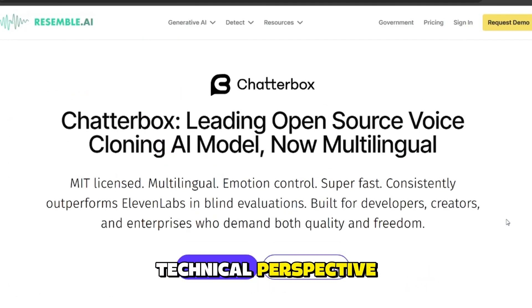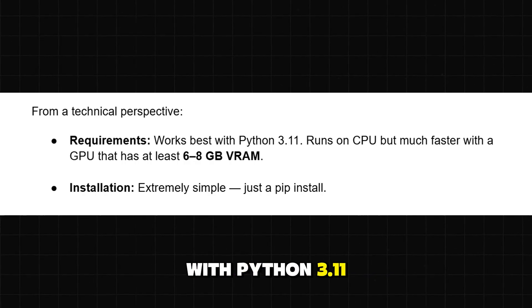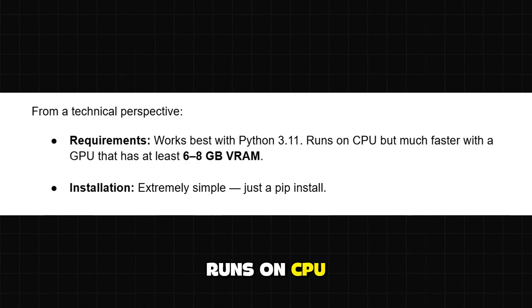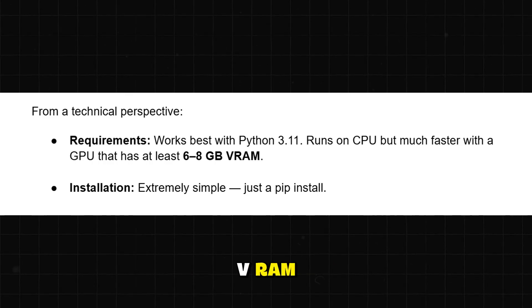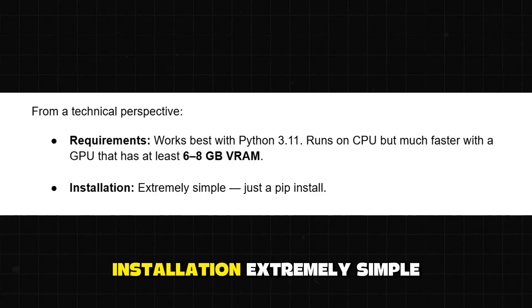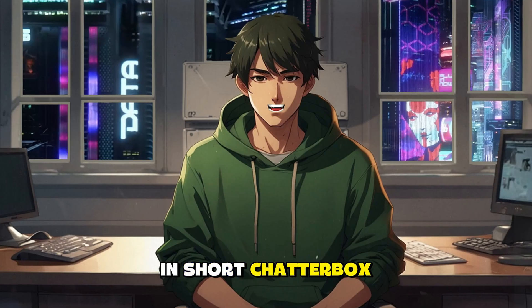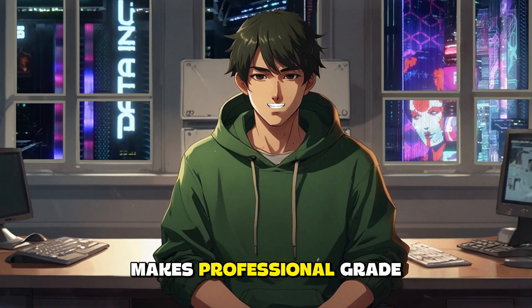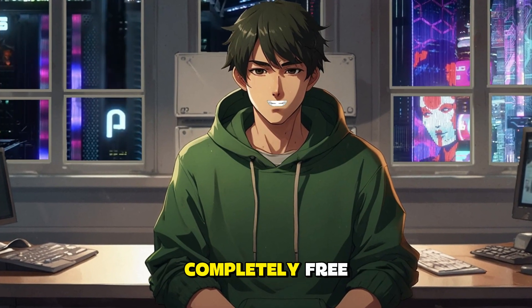From a technical perspective, Chatterbox works best with Python 3.11, runs on CPU, but much faster with a GPU that has at least 6 to 8 gigabytes of VRAM. Installation is extremely simple — just a pip install. In short, Chatterbox makes professional-grade voice synthesis available to everyone, completely free.